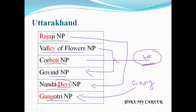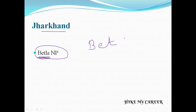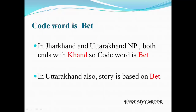Next, we are going to see about Jharkhand state national park. The Jharkhand state national park is Betla. There is one national park in Jharkhand state — Betla National Park. The code word is 'Bet', which is very important. In Jharkhand and Uttarakhand, both state names end with 'khand', so the code word is 'Bet'.